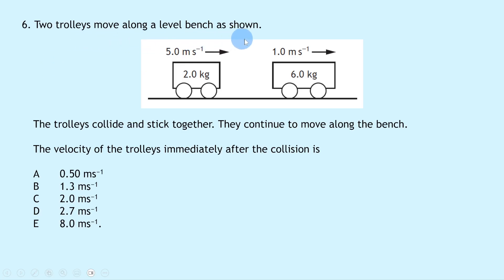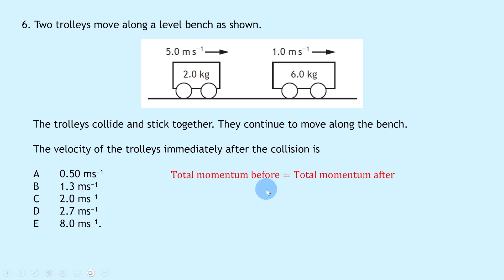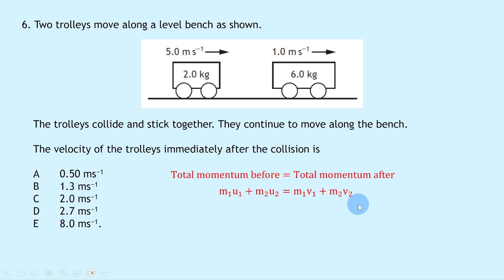Question 6 says two trolleys move along a level bench. A 2.0 kg trolley at 5.0 m/s to the right collides with a 6.0 kg trolley at 1.0 m/s to the right. The trolleys collide and stick together. Using conservation of linear momentum: total momentum before equals total momentum after. In symbol form: M₁U₁ + M₂U₂ = (M₁ + M₂)V, since both trolleys have the same final velocity after sticking together.